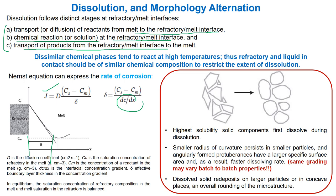In equilibrium, the saturation concentration of refractory composition in the melt and melt saturation in the refractory are balanced. During dissolution and re-precipitation, the angular morphology of grains changes to spherical geometry. Sometimes the grading and angularity of grains may vary the batch properties.